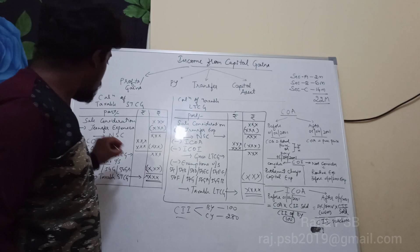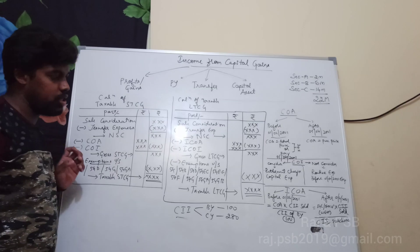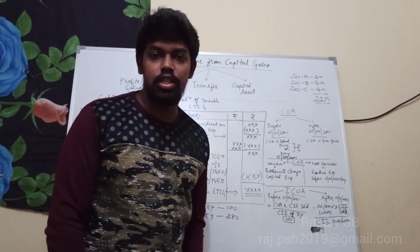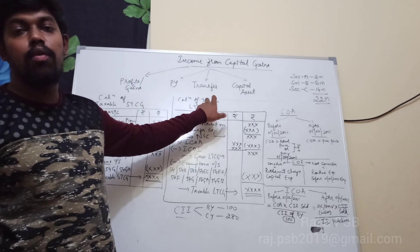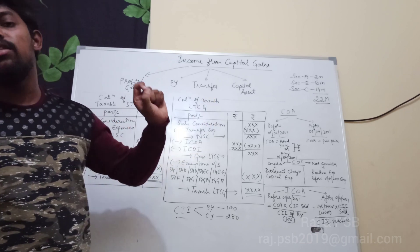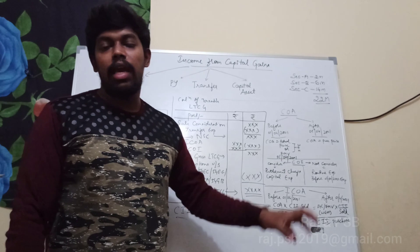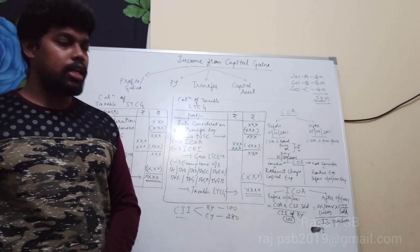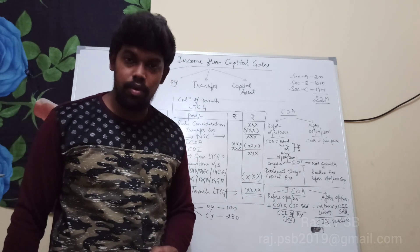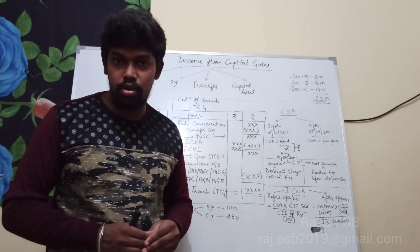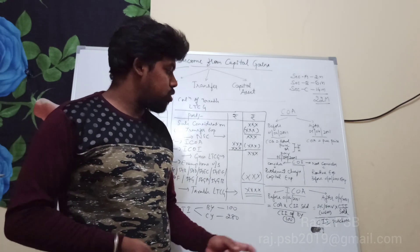Next is the index cost of acquisition. This is also classified into two types: before 1/4/2001 and after 1/4/2001 — prior and post the base year of 1/4/2001.